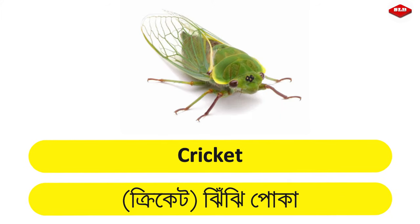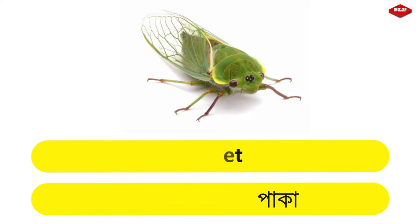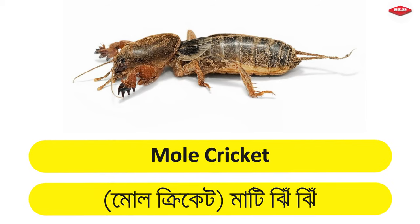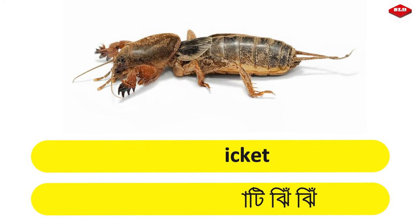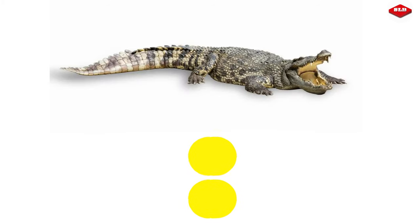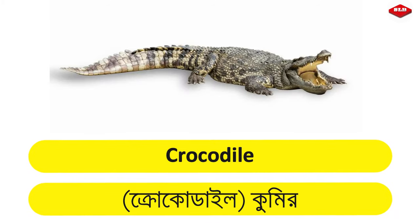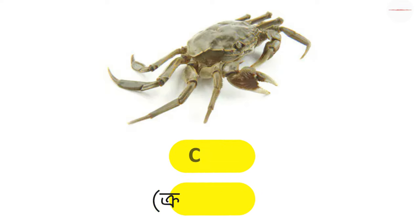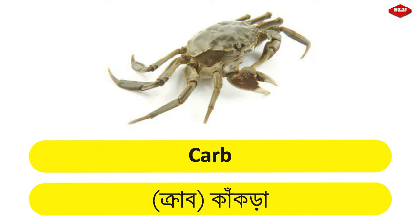Cricket – Jiji Poka. Mole Cricket – Mati Jiji. Crocodile – Kumir. Crab – Kakra.